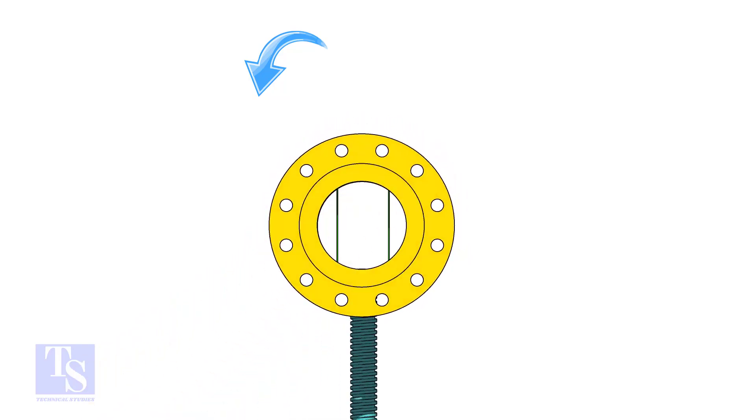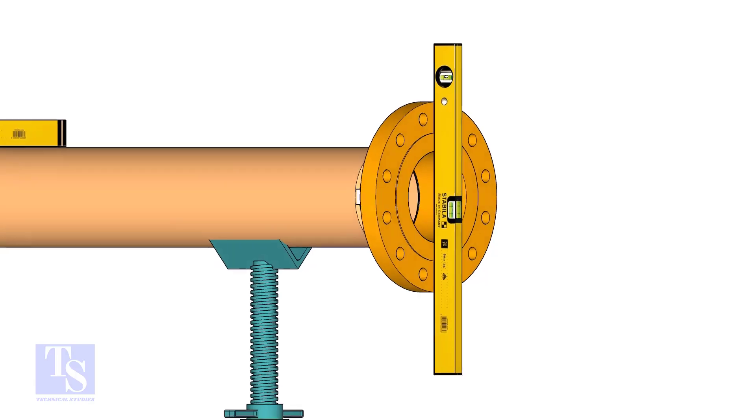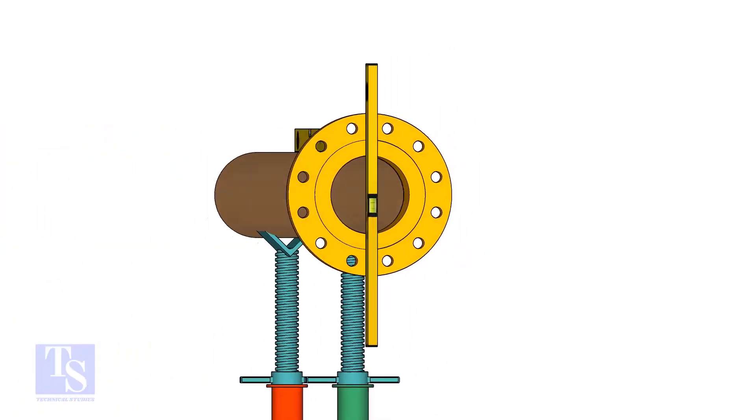Rotate the pipe and flange 90 degrees to either side. Check the vertical level of the flange, if correct, tack weld on the top side of the joint.